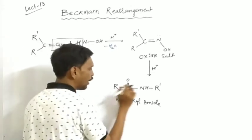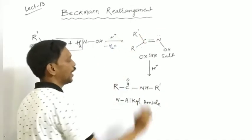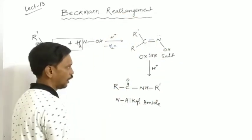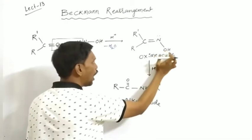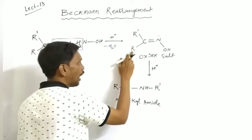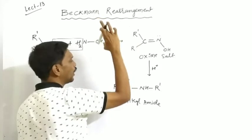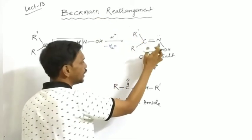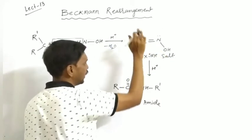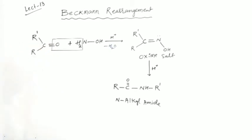If the R group is present on one side and R' on the other, the OH group sits opposite to one alkyl group. The alkyl group which is present opposite to OH is the one that rearranges — it migrates to nitrogen. So we finally get N-alkyl amide. This is called Beckmann rearrangement.